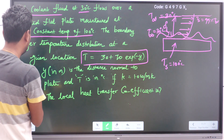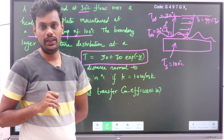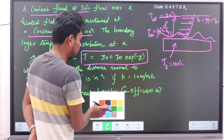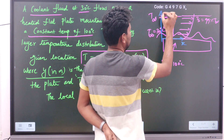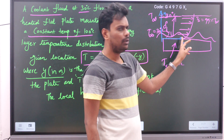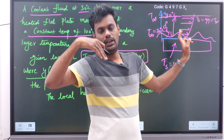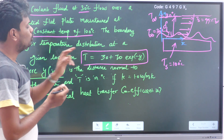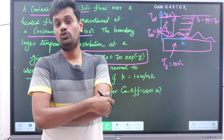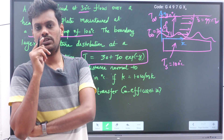The variable y in meters is the distance normal to the plate, meaning perpendicular to the plate. There are two axes: x-axis and y-axis. The temperature gradient exists in the y direction only — temperature is varying from one point to another in y. The temperature profile given in the problem is T = 30 + 70·e^(−y).